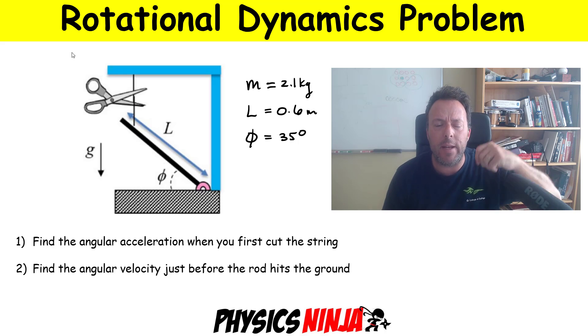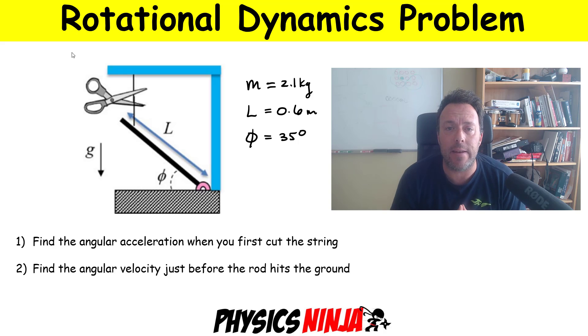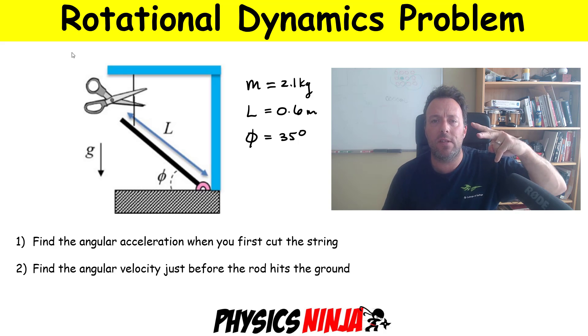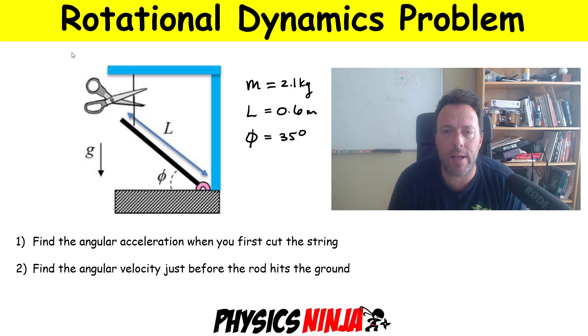It's being suspended there by a string connected near the end. Now what I'm going to do is take the scissor and snip that string, and I have two problems associated with this. Number one, how do you find that initial angular acceleration of the problem when it starts to rotate? What is alpha for this problem?